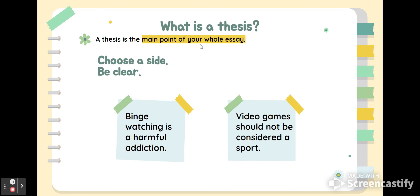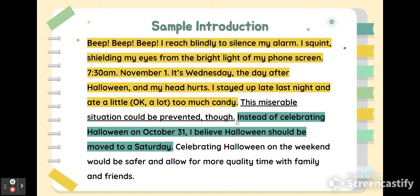That leads us to our thesis — the main point of the whole essay. This will also be in your graphic organizer. We want to make sure our point is clear; we have to choose a side. You can't say 'binge watching is sometimes good, binge watching is sometimes bad' — we can't be wishy-washy. We have to choose a side in persuasive writing. Examples: 'Binge watching is a harmful addiction' or 'Video games should not be considered a sport.' This person's thesis is clear: 'I believe Halloween should be moved to a Saturday.'